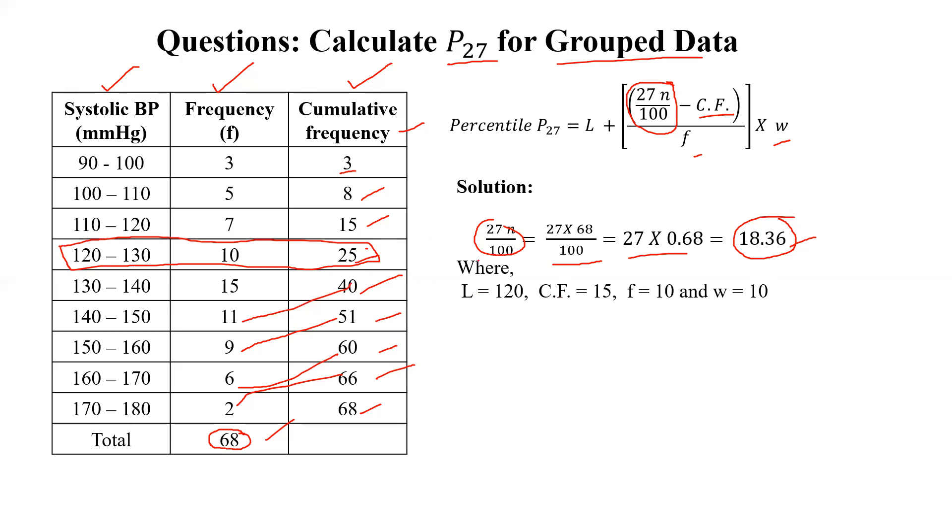And then we can find out L value 120. Cumulative frequency CF will get just preceding value of the percentile class interval in cumulative frequency, which is 15. And F is here 10, and W, upper limit minus lower limit, which is 10.